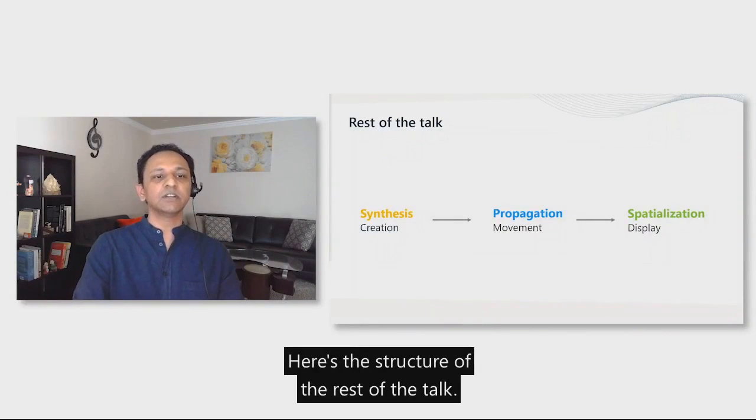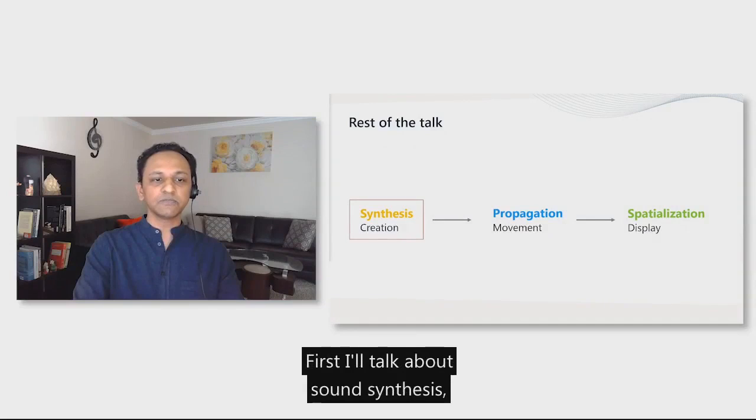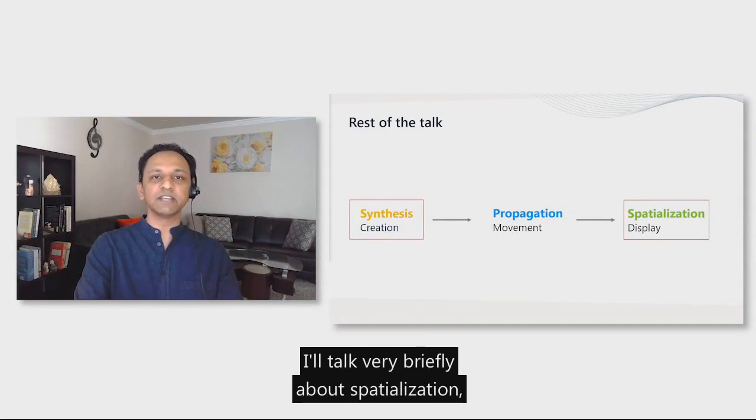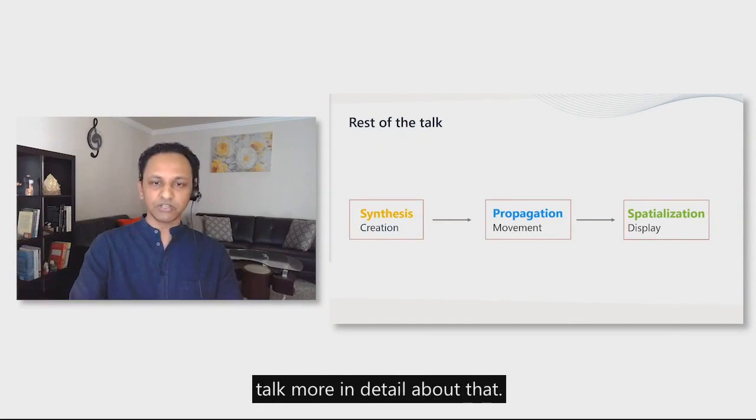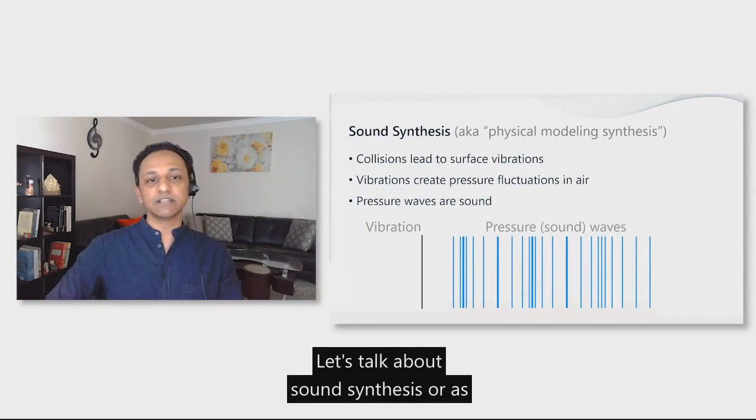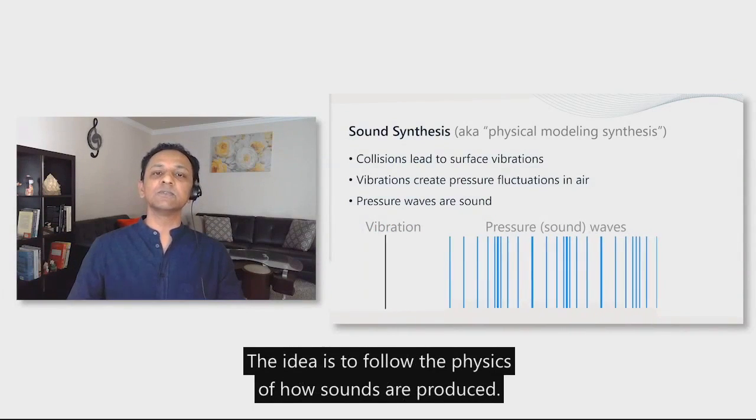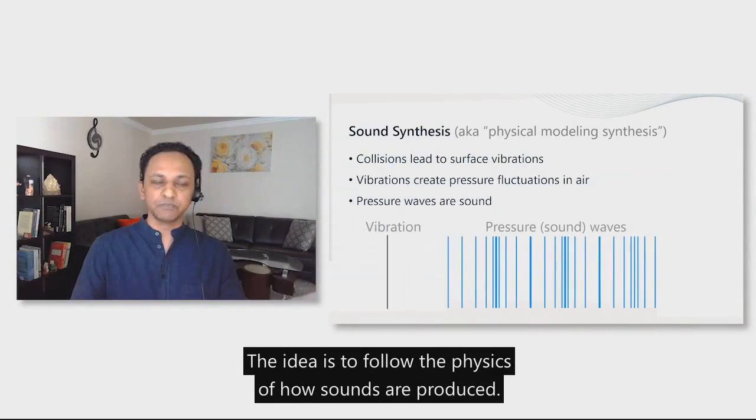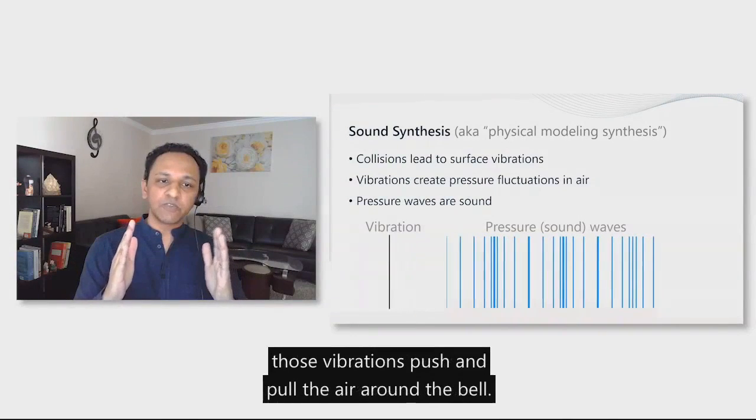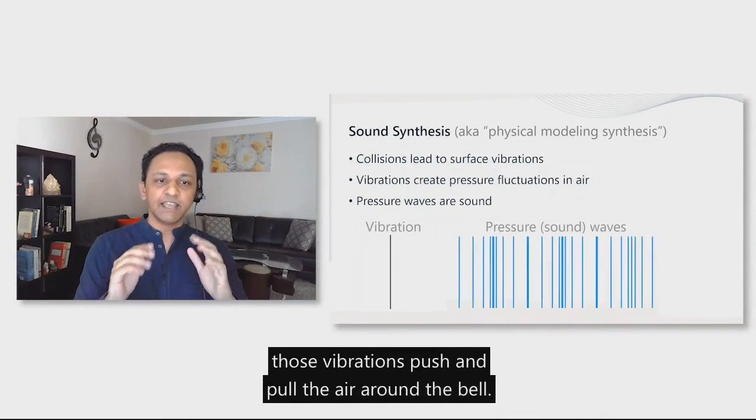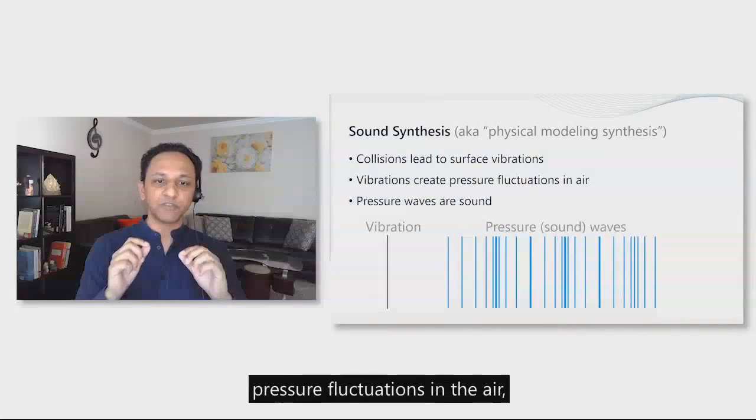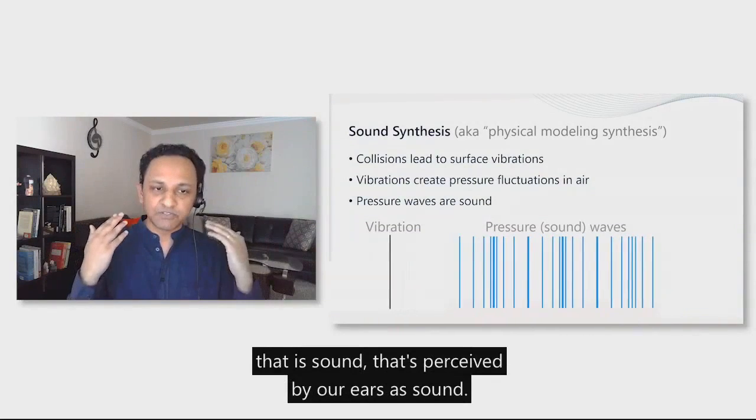Here's the structure of the rest of the talk. I told you about these three components. First I'll talk about sound synthesis, give you some flavor of the research there. I'll talk very briefly about spatialization, and then I'll go to propagation and talk more in detail about that. Let's talk about sound synthesis, or as it's called in audio circles, physical modeling synthesis. The idea is to follow the physics of how sounds are produced, which is, for example, when you strike a bell, its surface starts to vibrate. Then those vibrations push and pull the air around the bell. As that happens, air compresses and rarefies. These compressions and rarefactions, pressure fluctuations in the air, that is sound, that's perceived by our ears as sound.